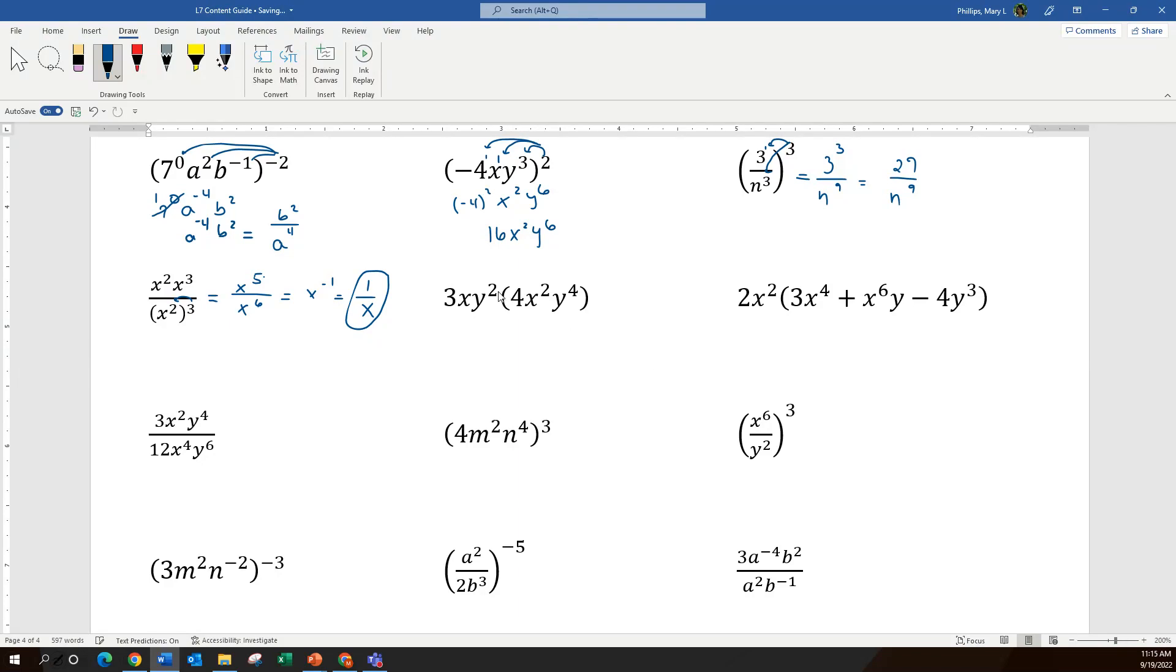Moving to the next one. This one is multiply. There's no addition here. So there's no distributive. It's just multiply. When we multiply, we're going to add exponents. When we multiply numbers, we simply multiply. So when I look at this problem, I see the 3 times 4. So 3 times 4 is 12.